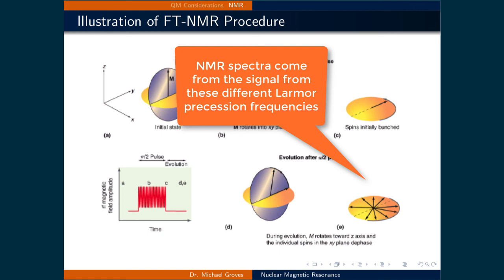The signal that is emitted due to these different Larmor precession frequencies, which can only be measured when the spins are out of alignment with the magnetic field pointed in the z direction, is what gives an NMR spectra.